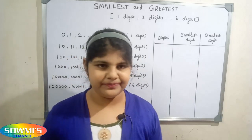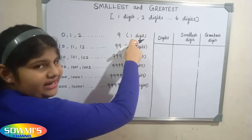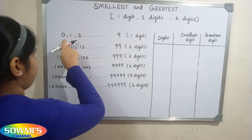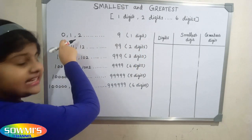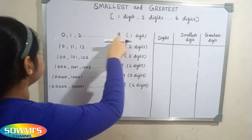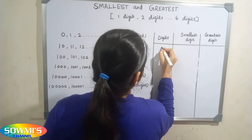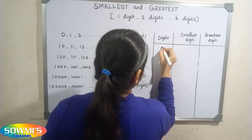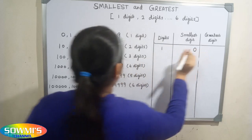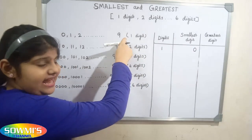First we will see one digit number. One digit number starts with zero and ends in nine. So the smallest one digit number is zero, and the greatest one digit number is nine.